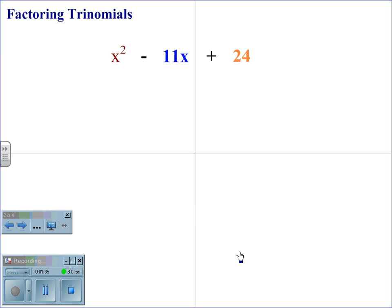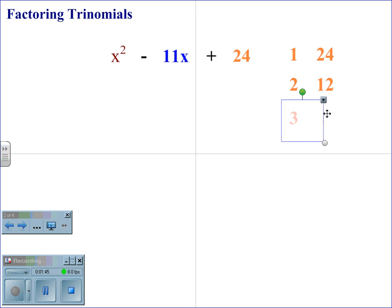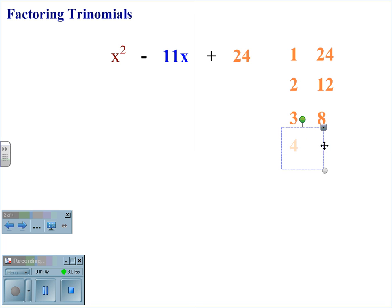For the trinomial x squared minus 11x plus 24, we again begin by factoring the c term. 24 factors out to 1 and 24, 2 and 12, 3 and 8, and 4 and 6.